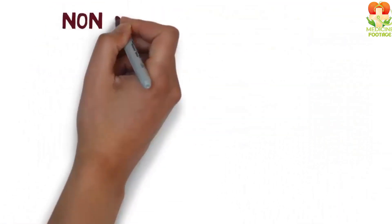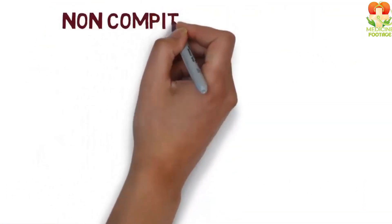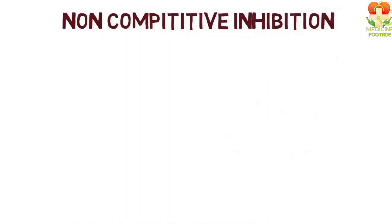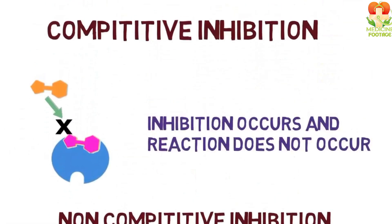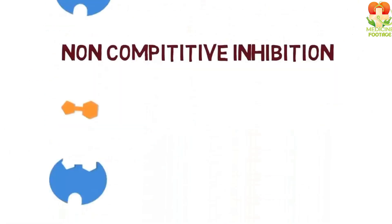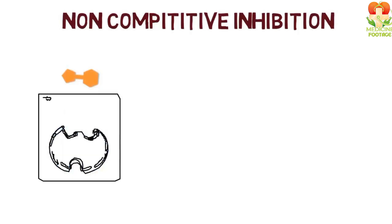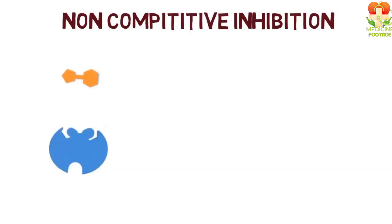Now let's move on to non-competitive inhibition to see how it works. Here is the enzyme and this is the substrate, opposite to it. This black structure represents the non-competitive inhibitor. It binds to the allosteric site. Once it attaches, the shape of the enzyme changes, preventing the substrate from fitting into the active site.